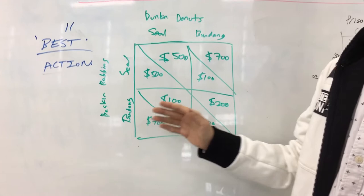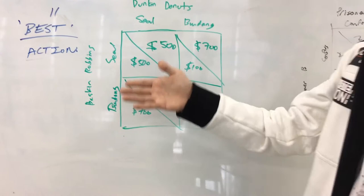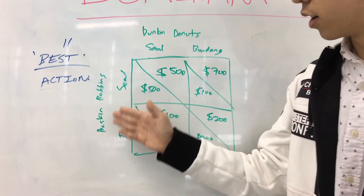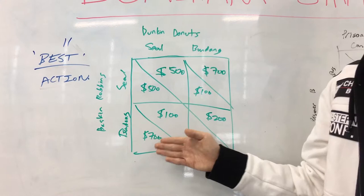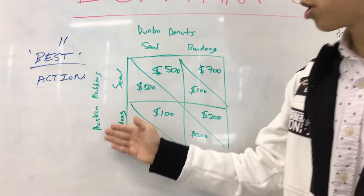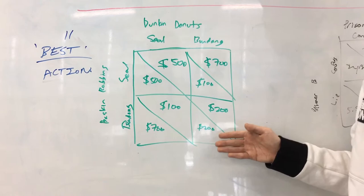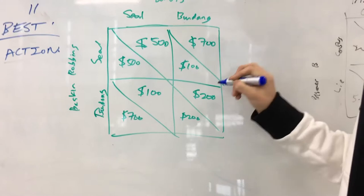Looking at it from the perspective of Baskin Robbins, we consider how Dunkin Donuts will act. If Dunkin Donuts decides Seoul, Baskin Robbins chooses between $500 or $700 — and $700 is the better option. If Dunkin Donuts decides Brundang, Baskin Robbins chooses between $100 or $200, and selects $200. Therefore, the dominant strategy for both Dunkin Donuts and Baskin Robbins is to both produce at Brundang.